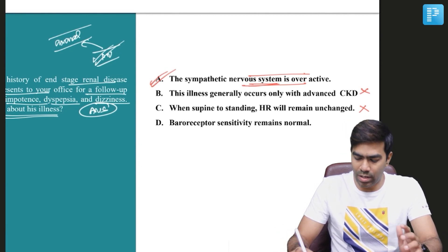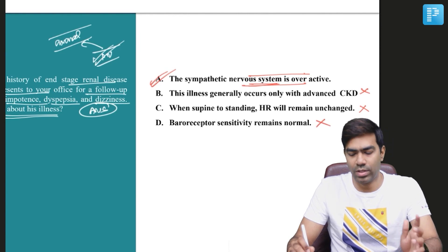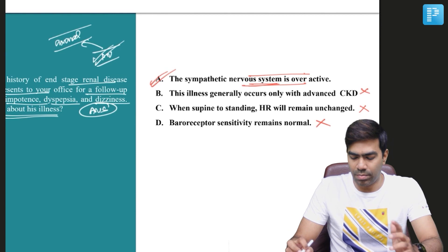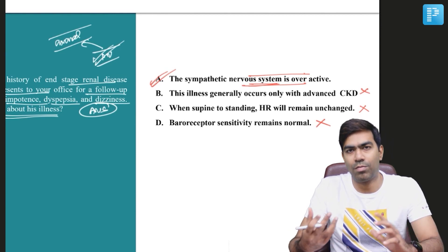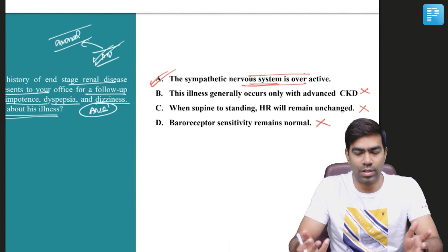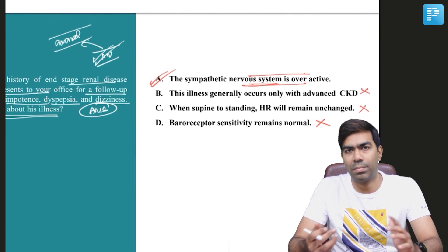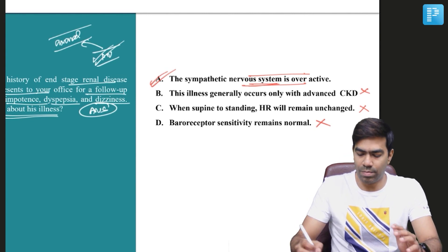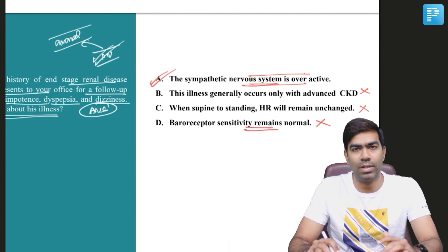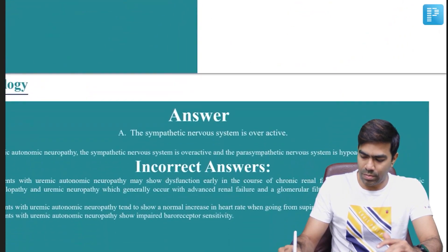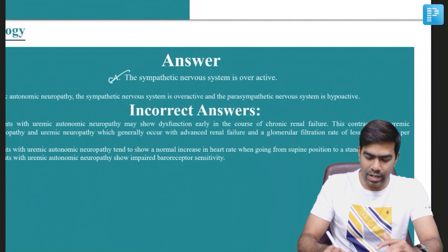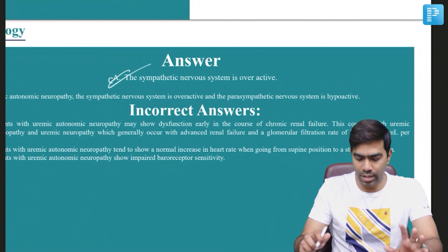Baroreceptor sensitivity remaining normal is also wrong. In patients with uremic autonomic dysfunction, baroreceptor sensitivity will be affected because baroreceptors are a form of the parasympathetic nervous system. In patients with uremia, parasympathetic nervous system activity will be less — hypoactive. So baroreceptor sensitivity will be abnormal and will be reduced in patients with chronic kidney disease and uremia. Therefore, the right answer for this question is option A.